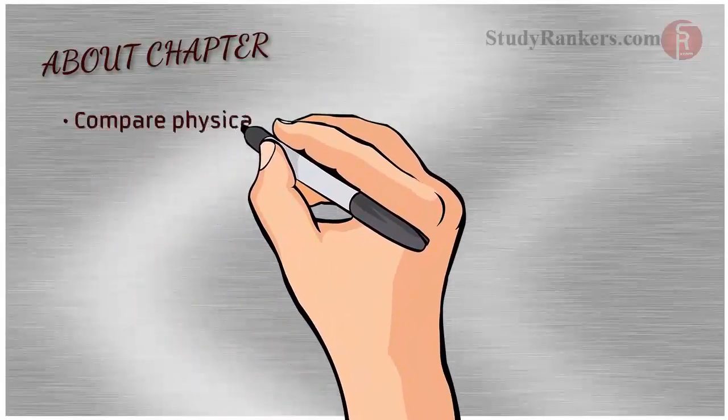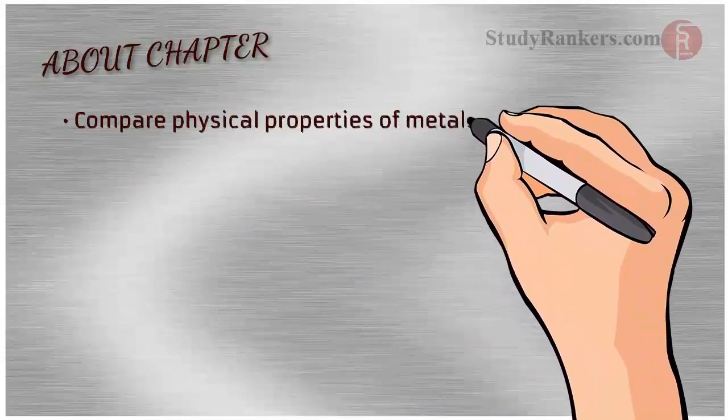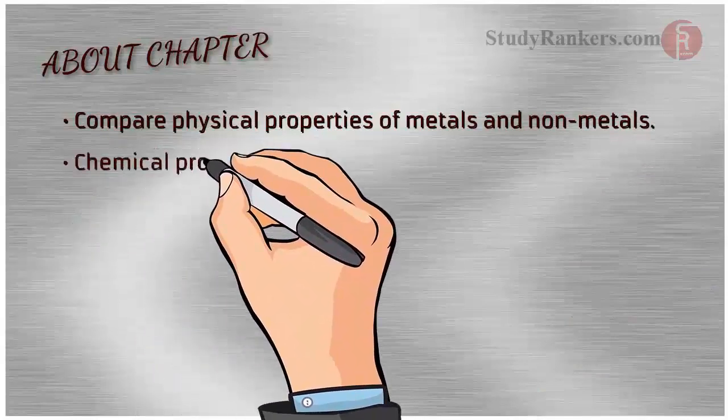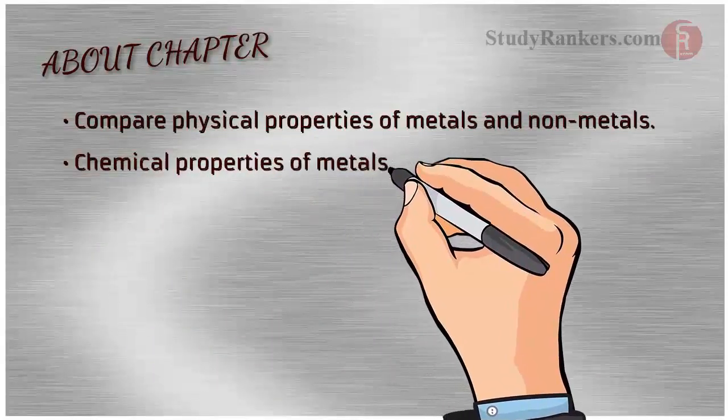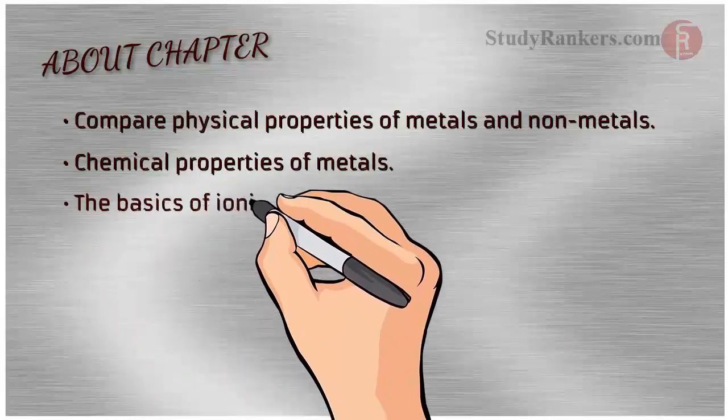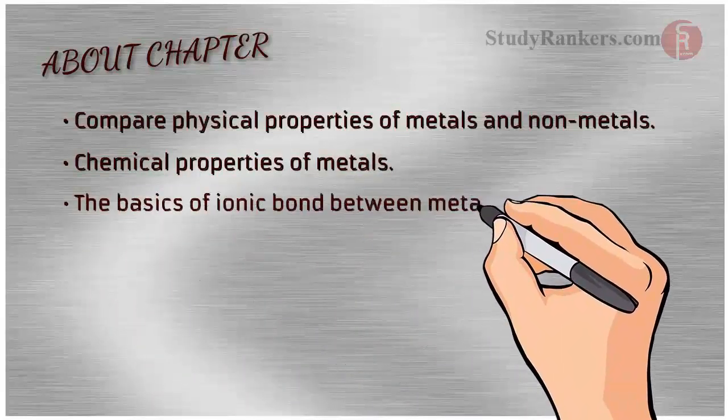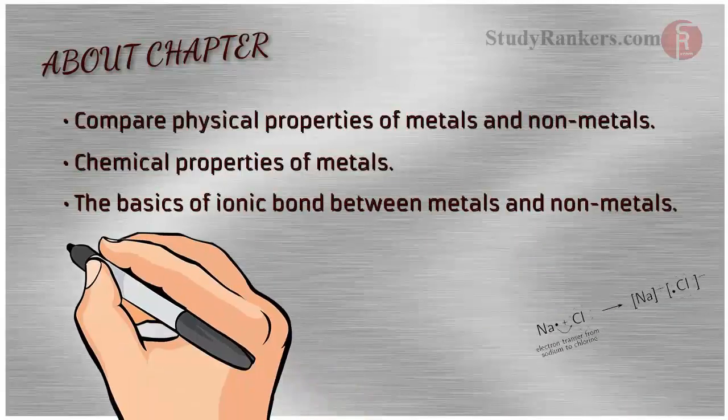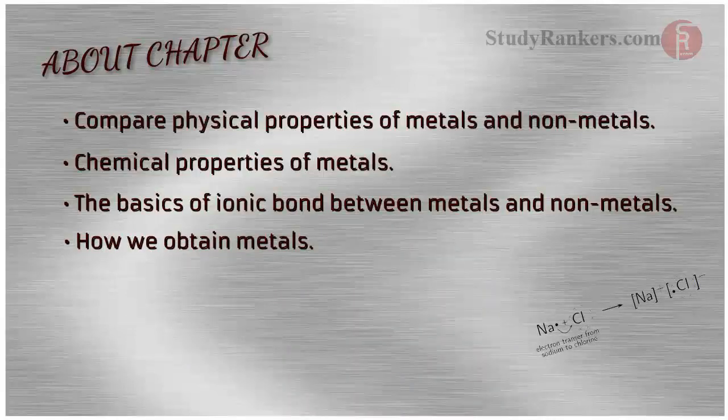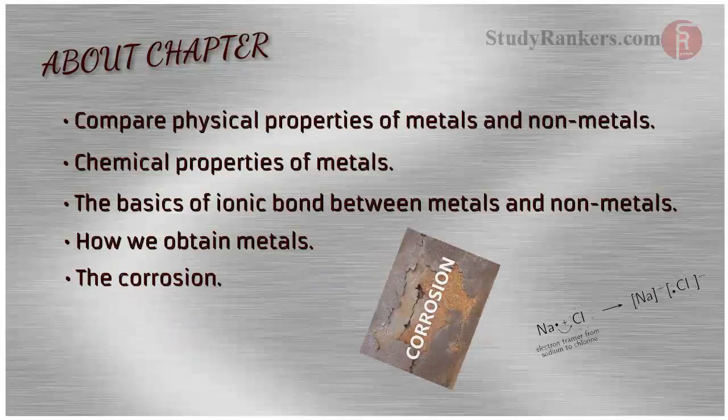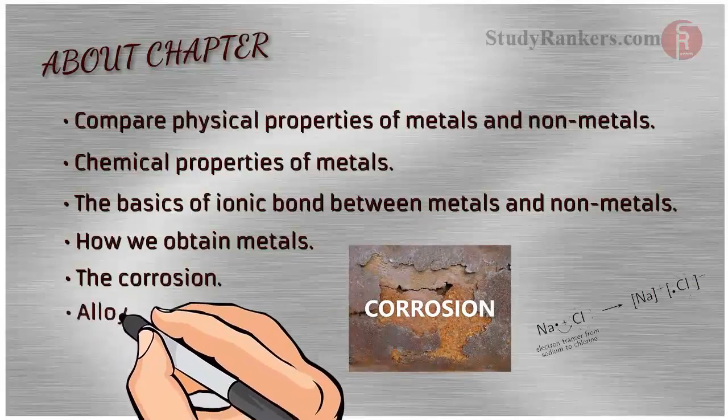In this chapter we will compare physical properties of metals and non-metals first. Then we will go for chemical properties of metals. We will also learn about the basics of ionic bonds between metals and non-metals. We will discuss how we obtain metals, study corrosion (remember the rust formation we discussed in chapter 1), then we will learn about alloys.